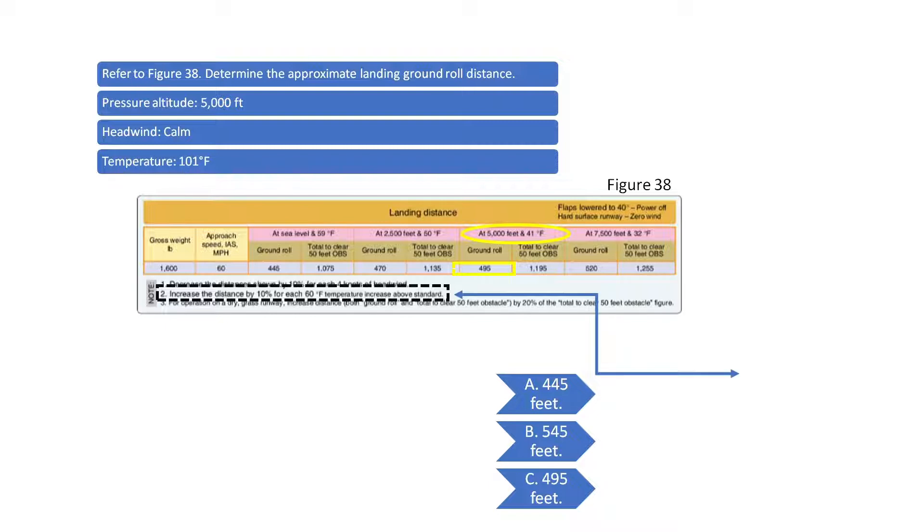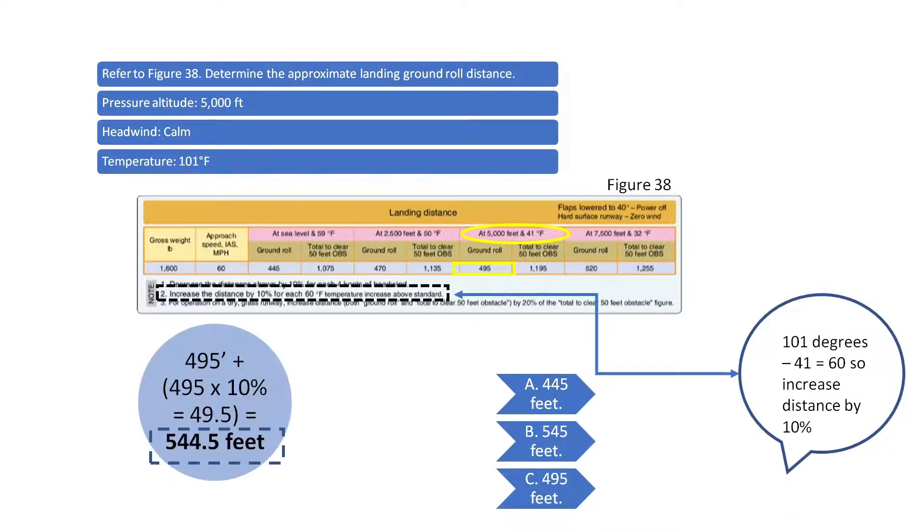The chart indicates to increase the landing ground roll distance by 10% for each 60 degrees in Fahrenheit temperature increase above standard. Since the standard air temperature assumed at 5,000 feet is 41 degrees and the current indicated air temperature is 101 degrees, we can see the current temperature is 60 degrees above the standard temperature of 41 degrees. Given the increase in temperature, we would increase the landing roll distance by 10%. 10% of 495 is 49.5. Add 49.5 to 495 to get the adjusted landing ground roll distance of 544.5 feet.